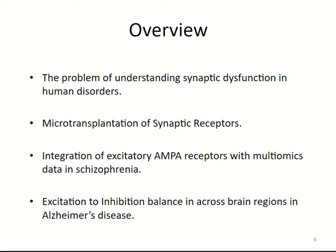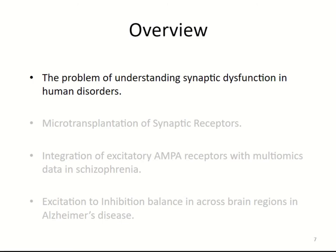We'll use information from microtransplantation to explain how we can use the amplitude of ion flux responses through receptors and integrate that data with multiomics — particularly transcriptomics and proteomics — in schizophrenia. We'll also explore whether we can use AMPA receptor data together with inhibitory GABA receptors to measure excitation-to-inhibition balance across brain regions in Alzheimer's disease.